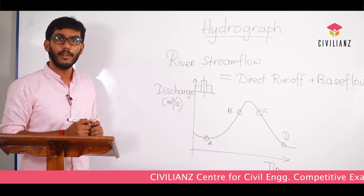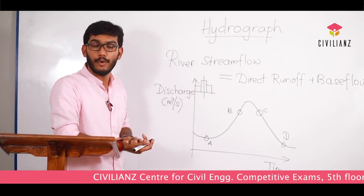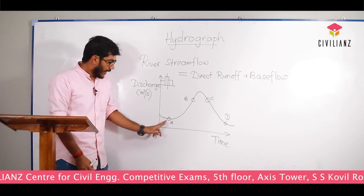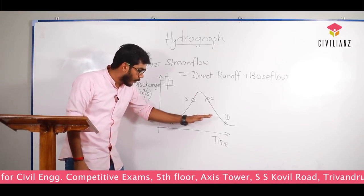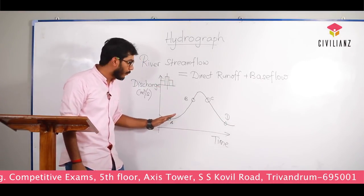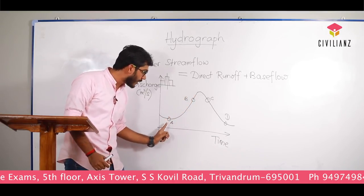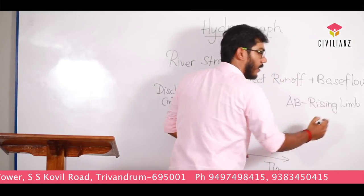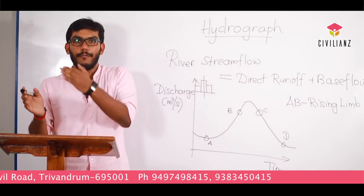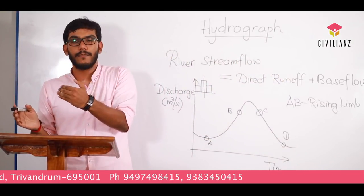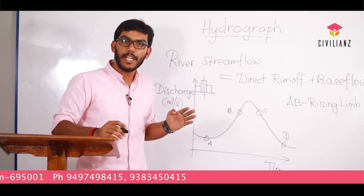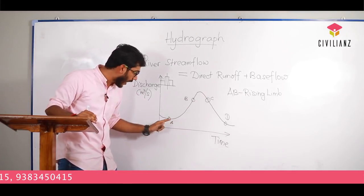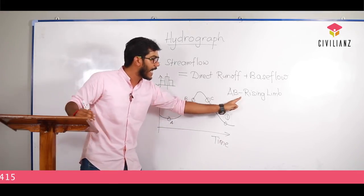This is a very important topic from an exam point of view. The flow starts from the base flow and rises up. The portion AB is called the rising limb. The direct runoff joins the river, and the river rises up to its maximum amount, so this rising portion is called the rising limb.